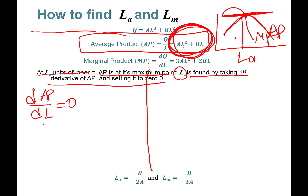For the term aL², the 2 comes down from the power, a is already there, giving 2aL raised to the power 2 minus 1. For the term bL, the power is 1, so 1 comes down, b is already there, giving b times L raised to the power 1 minus 1. Set it equal to 0.